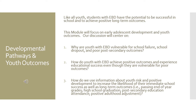How do youth with EBD achieve positive outcomes and experience educational success even though they are vulnerable for poor outcomes? And how do we use information about youth risk and positive development to increase the likelihood of their immediate school success as well as long-term outcomes such as passing grades, high school graduation, post-secondary education, attendance, and positive adulthood adjustment?